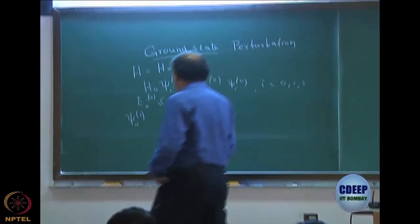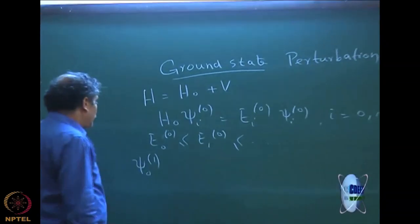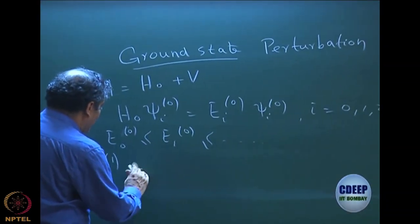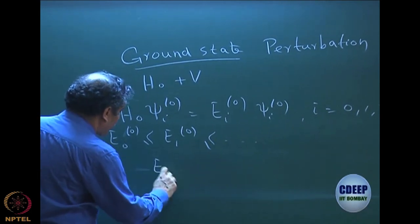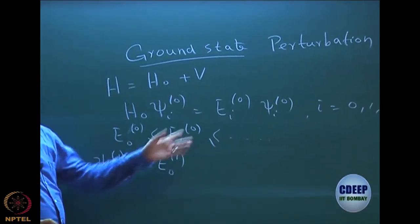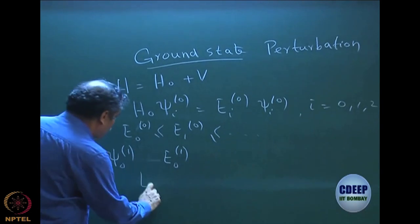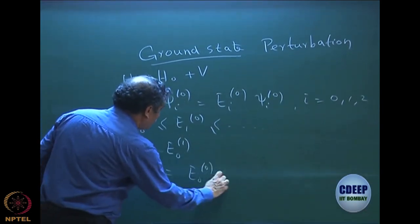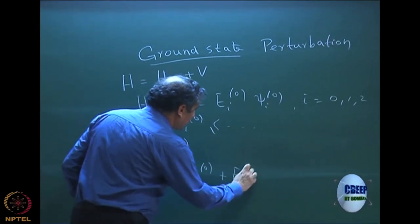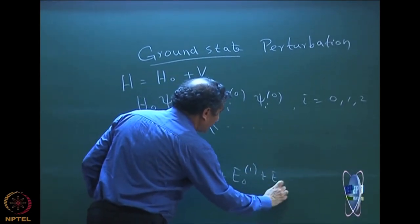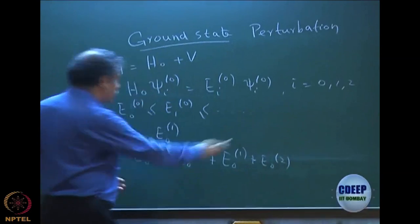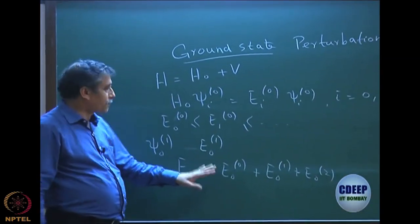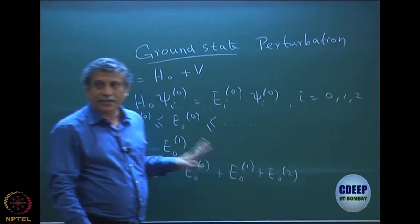When I write ψ01, that means it is the first order correction to the ground state. E01 is the first order correction to the ground state energy, etc. So my actual E0 will be E00 plus E01 plus E02, etc., and the same thing goes for ψ0. These are the things that we have to find out.